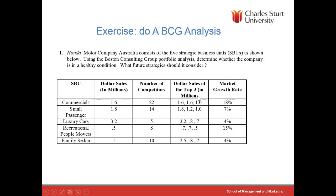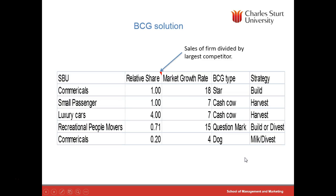Here's how a company might use this approach. You'll often know your own sales, the sales of the largest competitor, and the growth rate, so you can work out where you sit in the matrix quite easily. For example, in the commercials segment the largest competitor is 1.6; in luxury cars you may be at 4. When you position these in the BCG grid, you develop various strategies: build market share and grow new channels of distribution; a harvest strategy focused on maximizing cash flow from a cash cow; the build-or-divest decision for a question mark; and milk or divest for a dog.